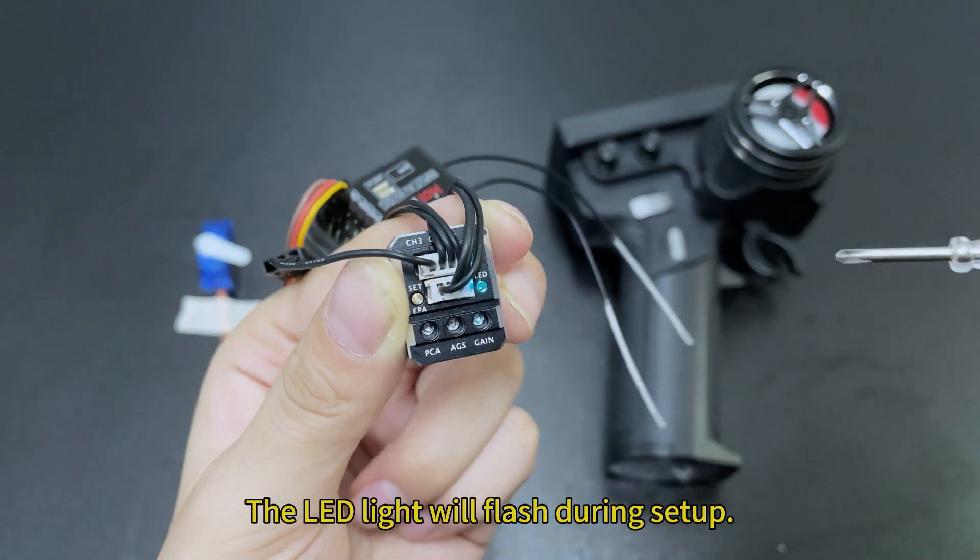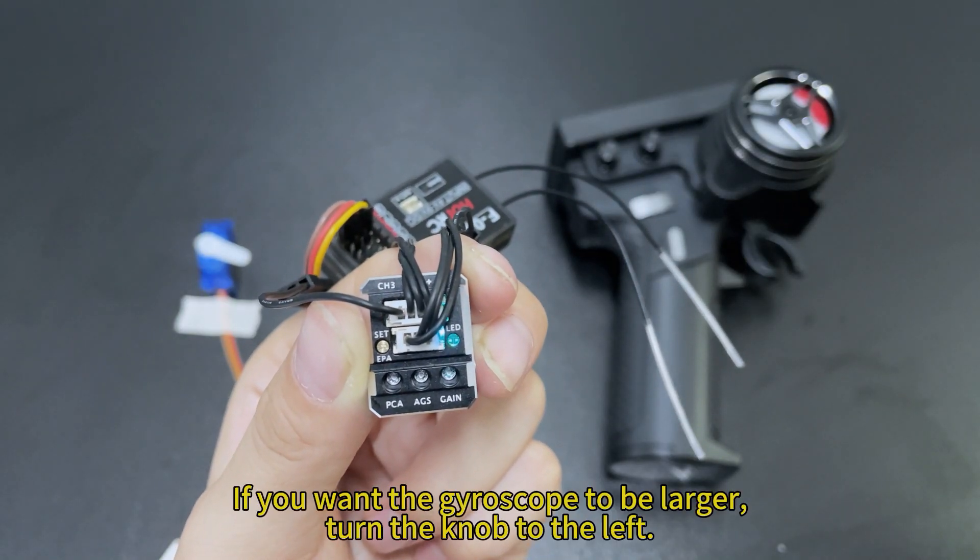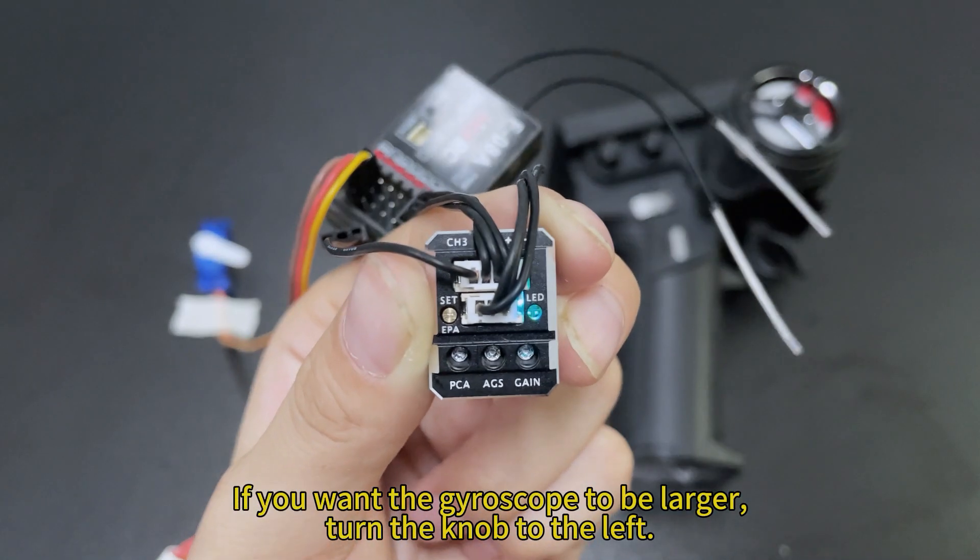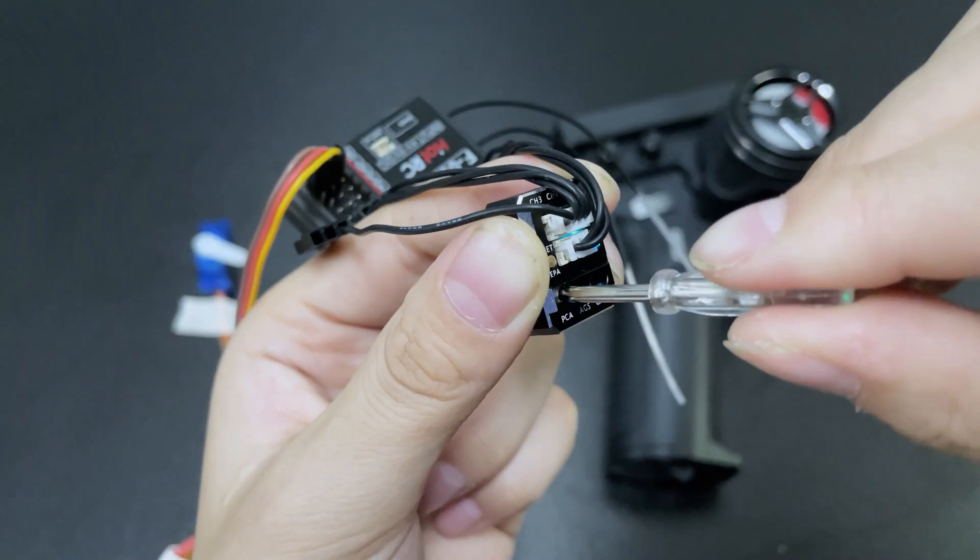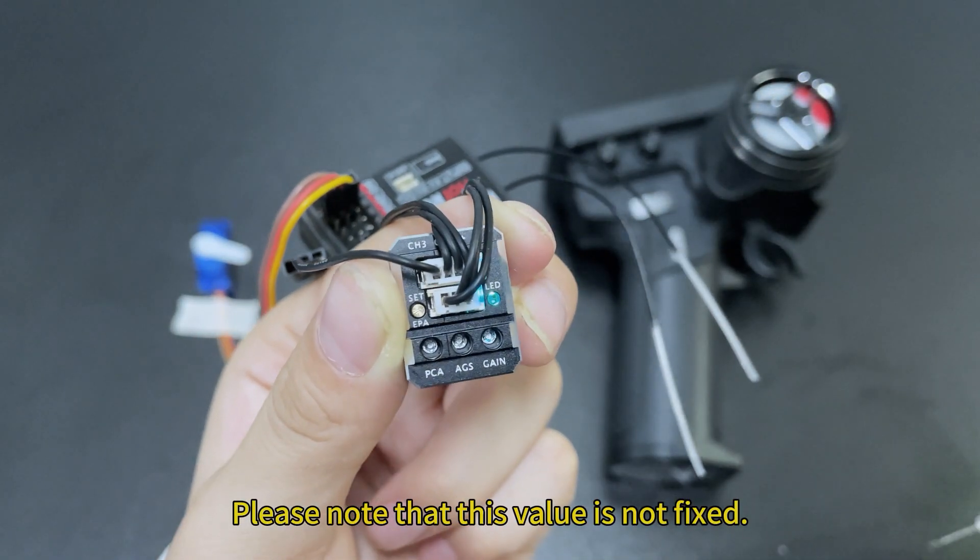The LED light will flash during setup. If you want the gyroscope to be larger, turn the knob to the left. Please note that this value is not fixed. Can be adjusted according to the actual situation of the car.